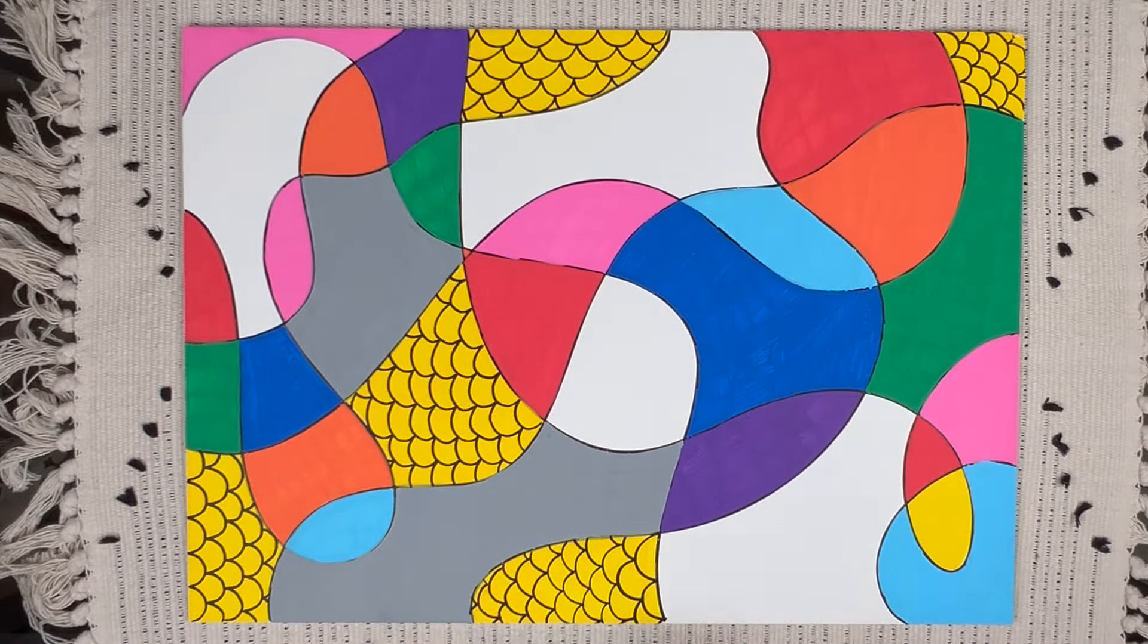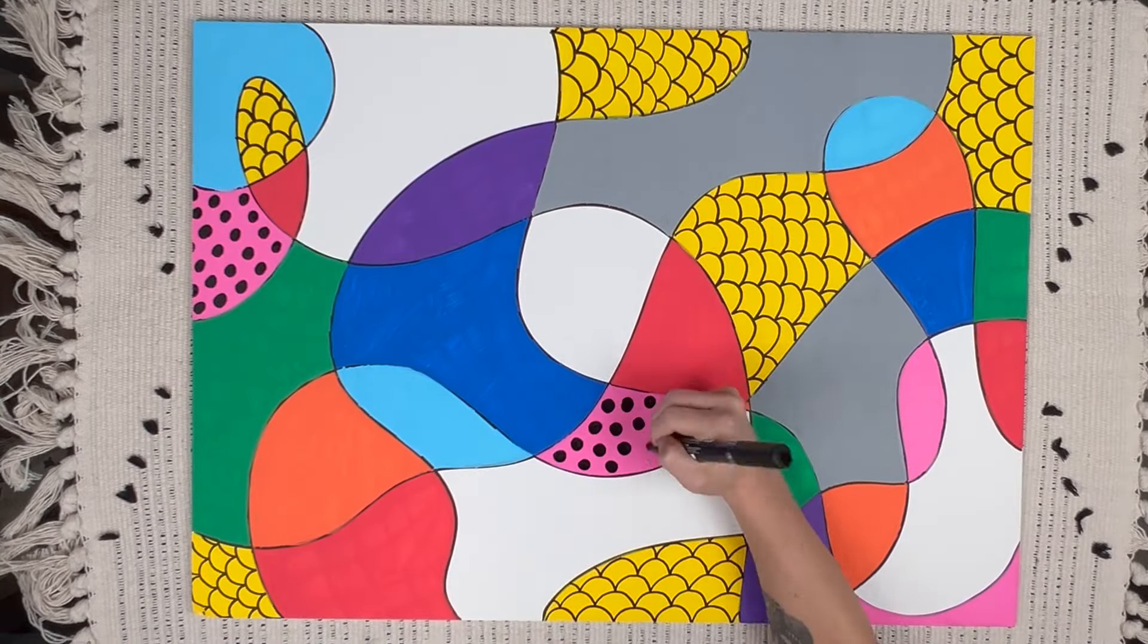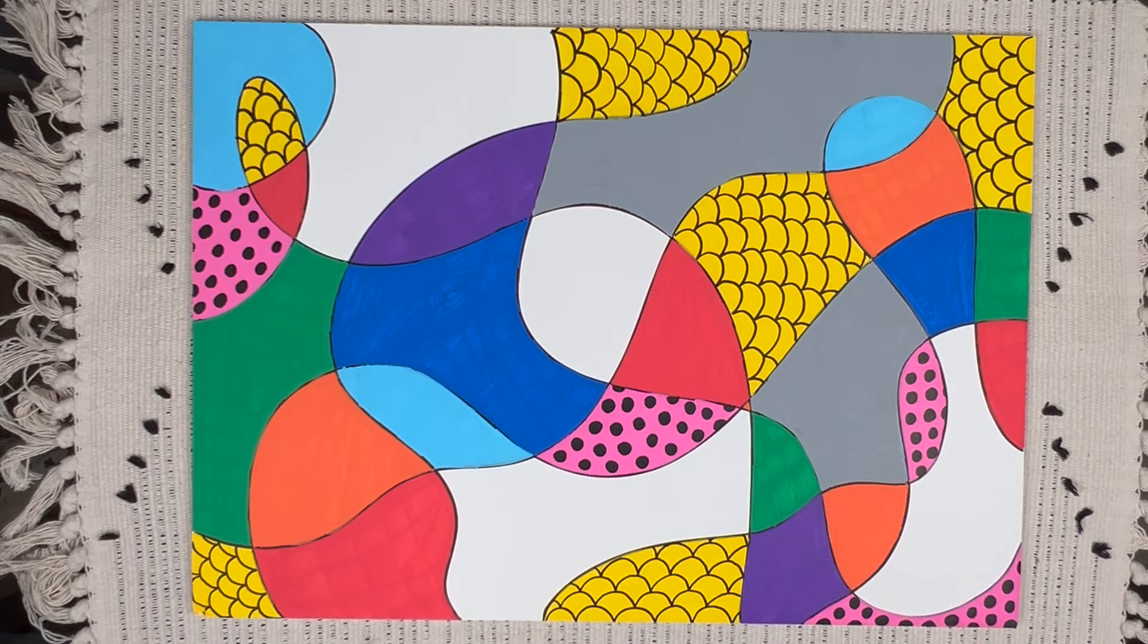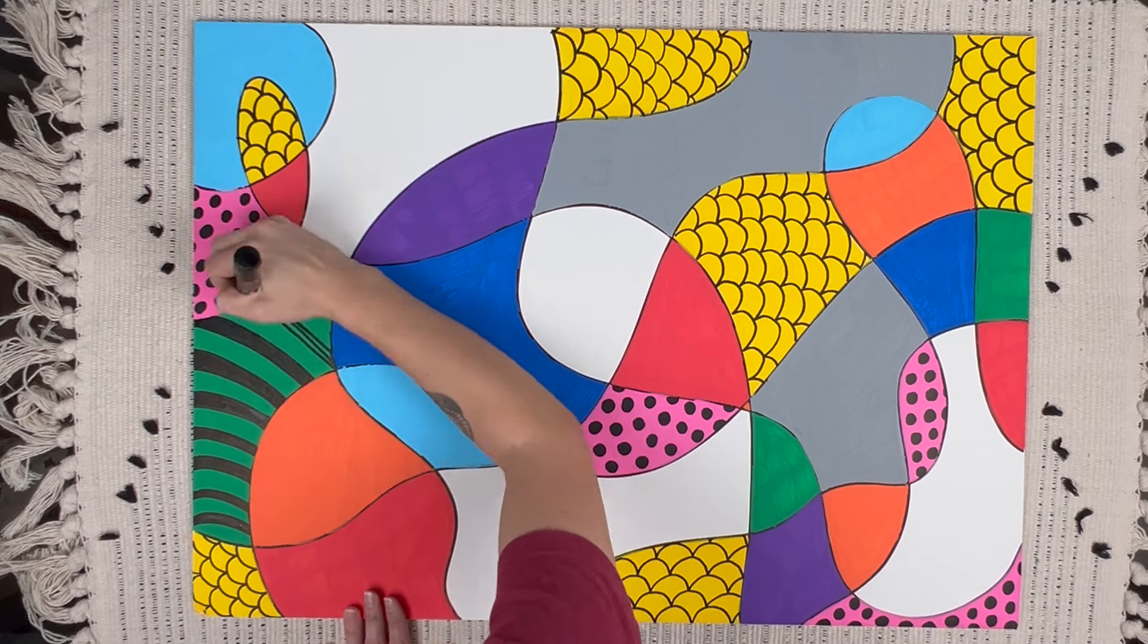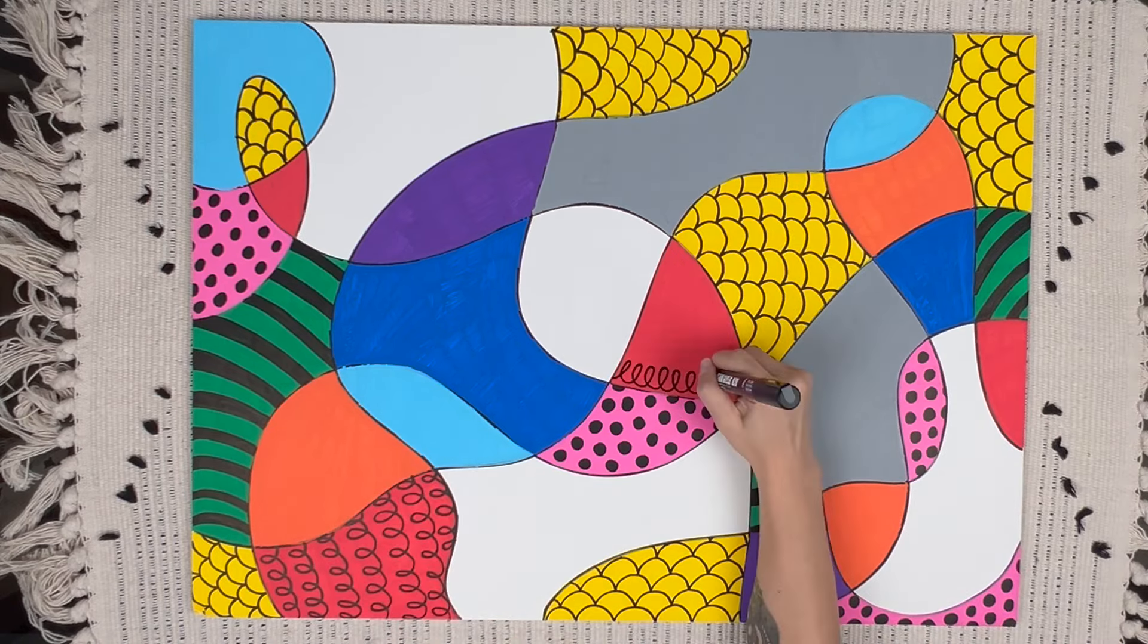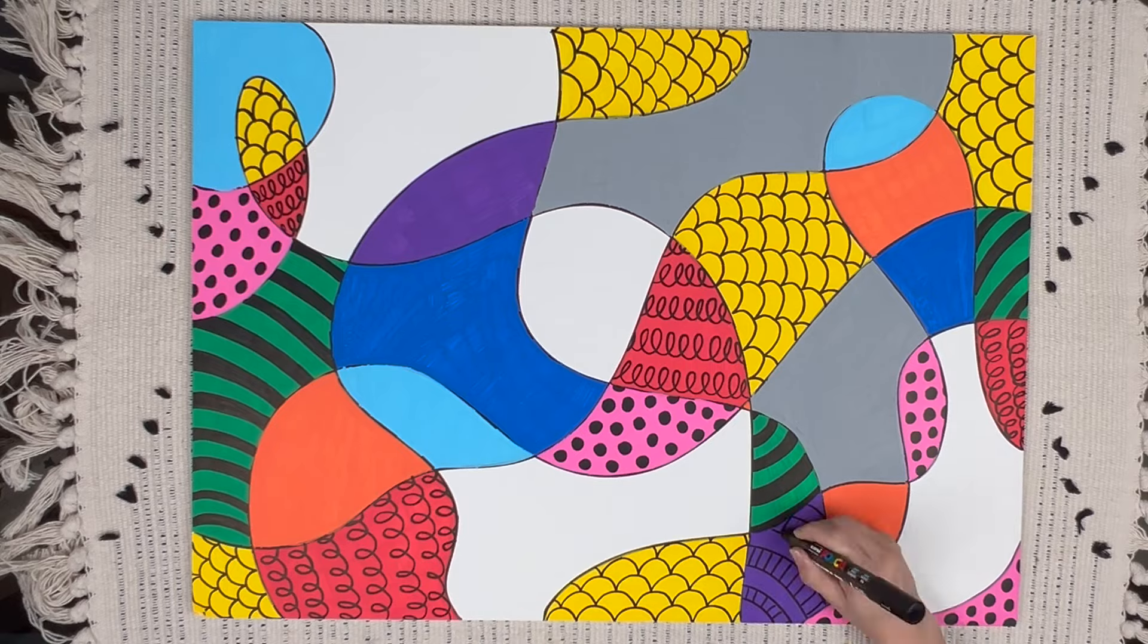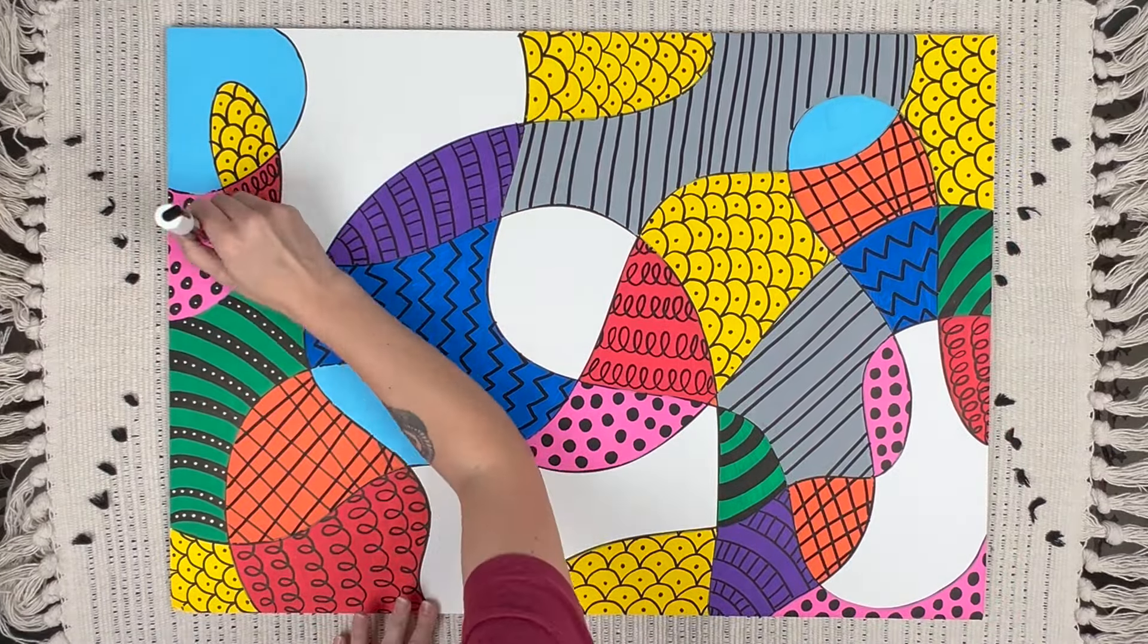I'm doing the same pattern in each color. You can see all the yellows got the mermaid scales, all the pink shapes got the polka dots. Because this piece was so large, this just saved me from having to brainstorm all these different Zentangle or doodle patterns. It kind of brings some balance into this piece.